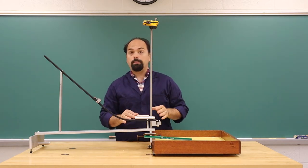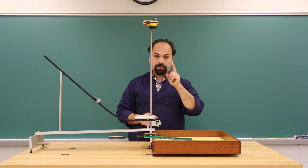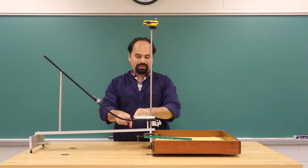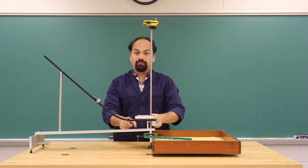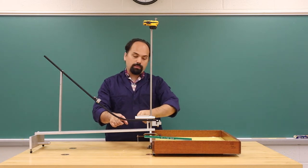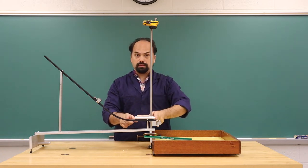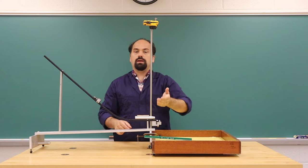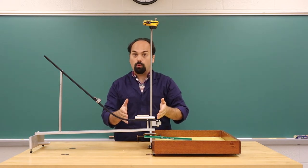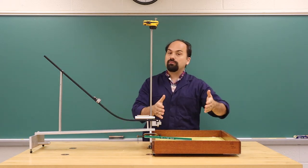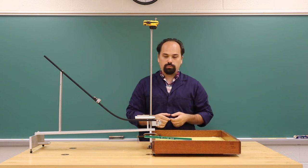A couple things to know about this equipment. First, it is very important that this last section of track be level, so that the ball is coming in with a constant velocity, so you can calculate the constant velocity before. After the collision, everything is in the air, so everything will be conserved.